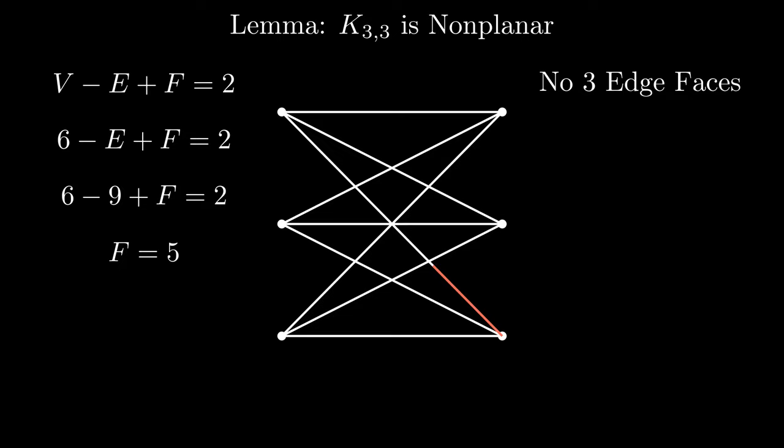As we can see, it is impossible to have a three edge face, as no three edge paths can be closed, because they end on the opposite side that they start on. Therefore, each face must have at least four edges, so 4F must be less than or equal to 2E, because 4F is the minimum number of face edge pairs, and 2E is the maximum number of faces that the edges could appear in. Plugging 9 in for E, and solving for F gives us F is less than or equal to 4.5.